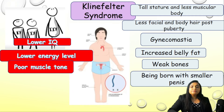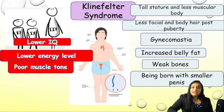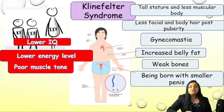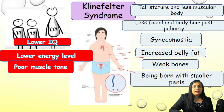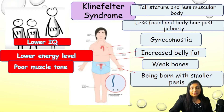The third condition is Klinefelter syndrome. From head to toe: they are tall with less muscular body, less facial and body hair. Post-puberty there is gynecomastia, increased belly fat, and weak bones. They are born with a small penis. Three important parameters are on the lower side: low IQ, low energy level, and low muscle tone. Remember these features when you have a tall stature with doubt of Klinefelter syndrome.